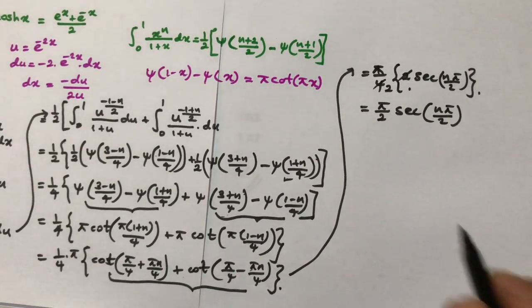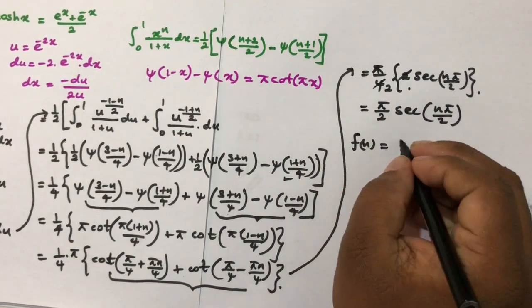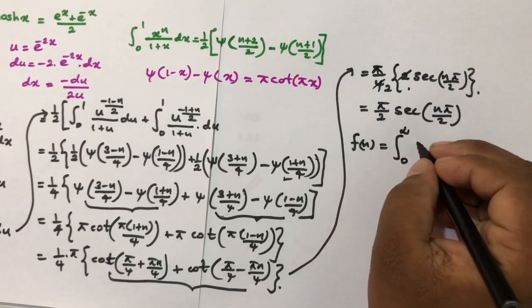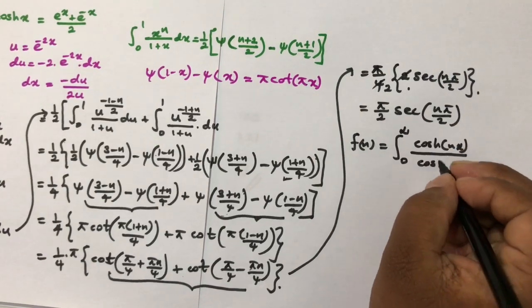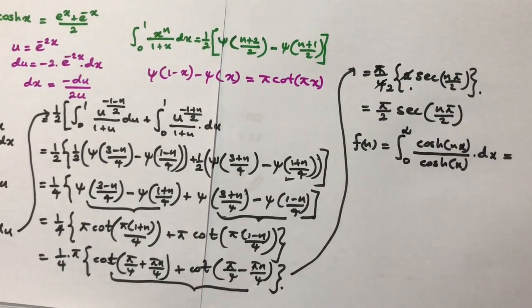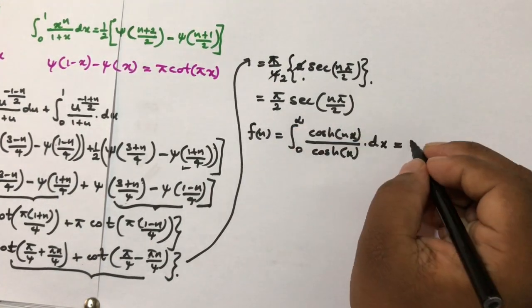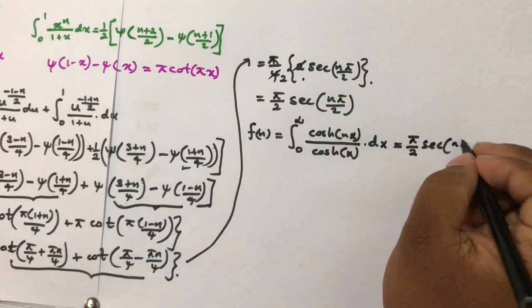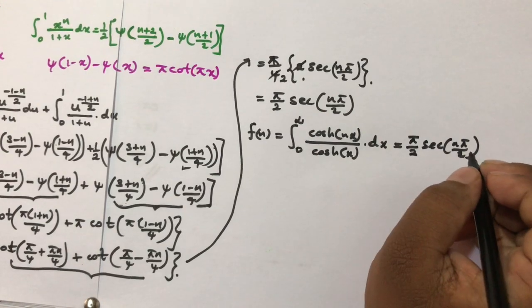So we have the result: f(n) = the integral from 0 to infinity of cosh(nx)/cosh(x) dx = (π/2)·sec(nπ/2).